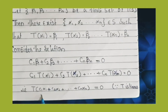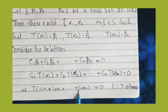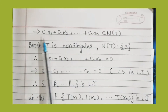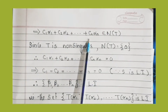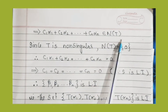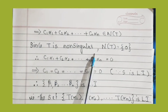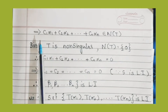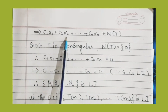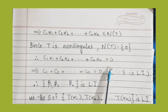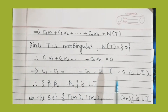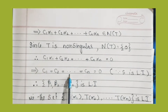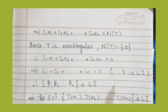Now c₁α₁ + c₂α₂ + ... + cₙαₙ belongs to N(T). Assume that T is non-singular, so N(T) = {0}. Then c₁α₁ + c₂α₂ + ... + cₙαₙ = 0. Since S is linearly independent, that means c₁ = c₂ = ... = cₙ = 0.